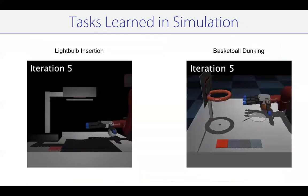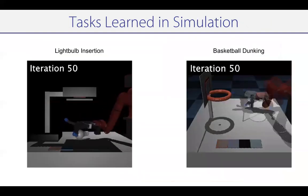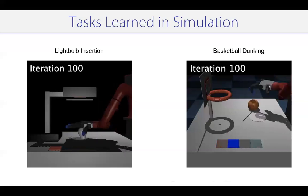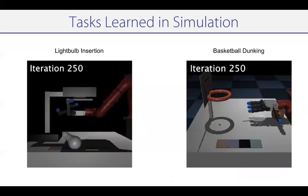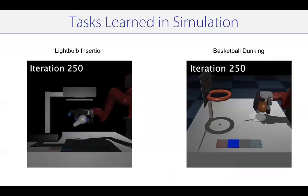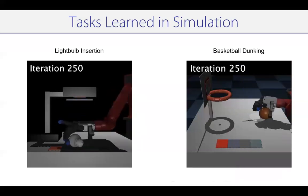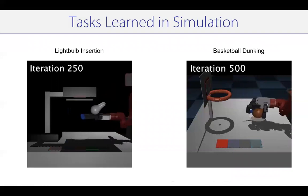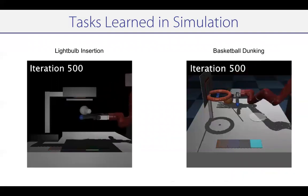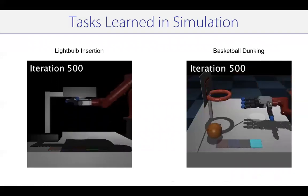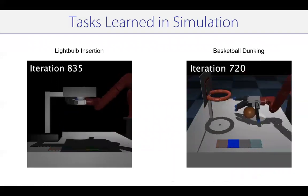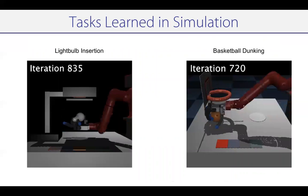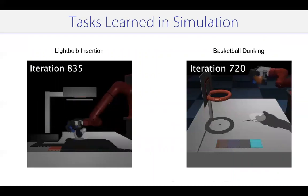This can also be applied to several tasks in simulation, like light bulb insertion and basketball dunking. Tasks like reposition and reorient provide resets for tasks like pickup, which subsequently provide resets for tasks like insertion and dunking, and all of these tasks are being learned together.